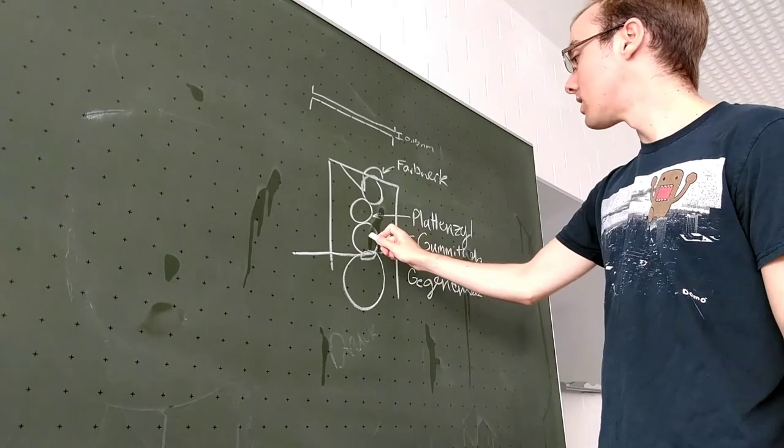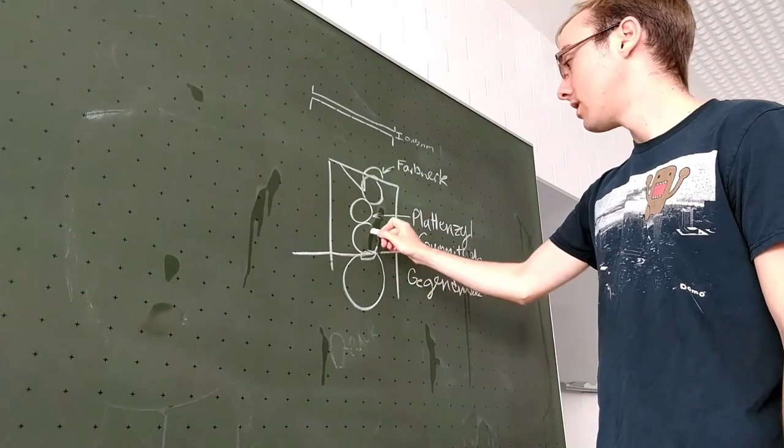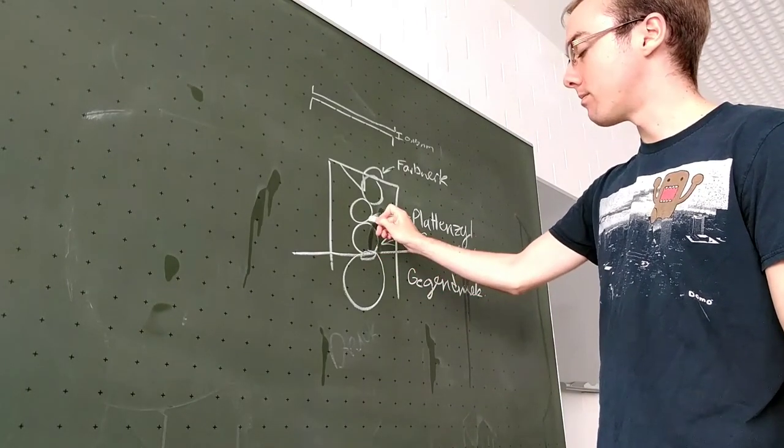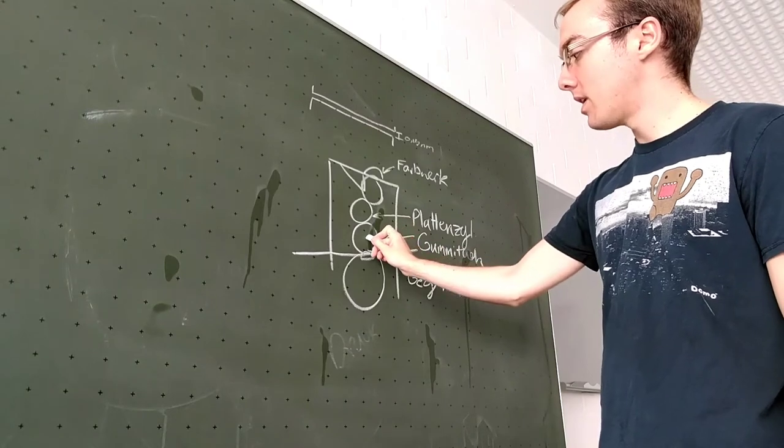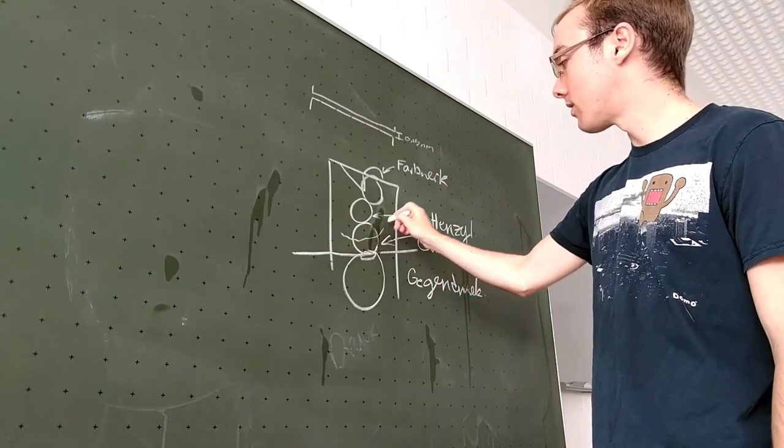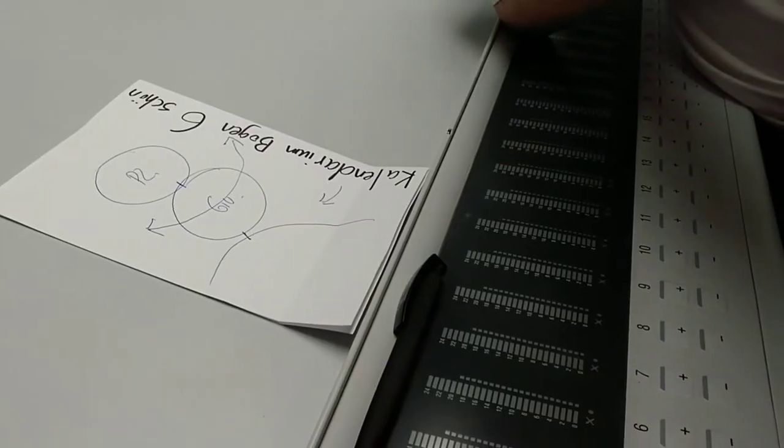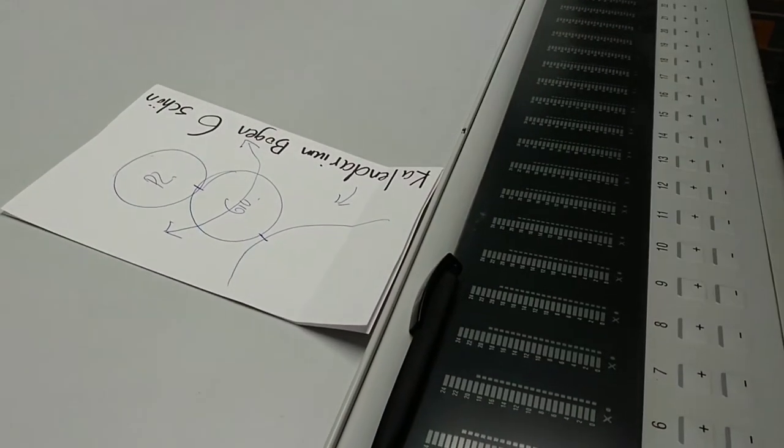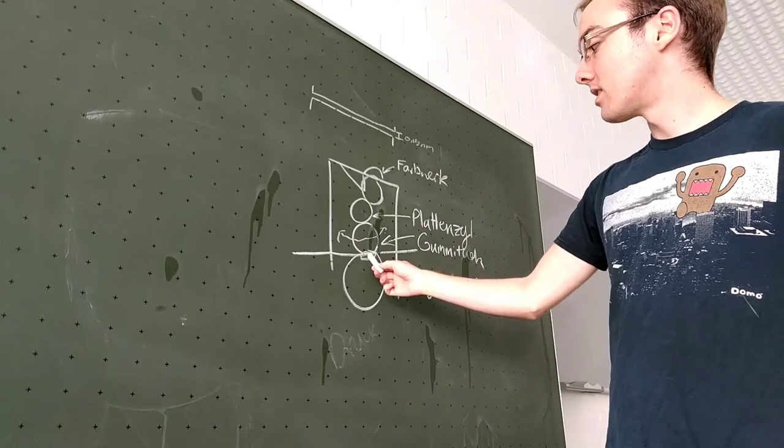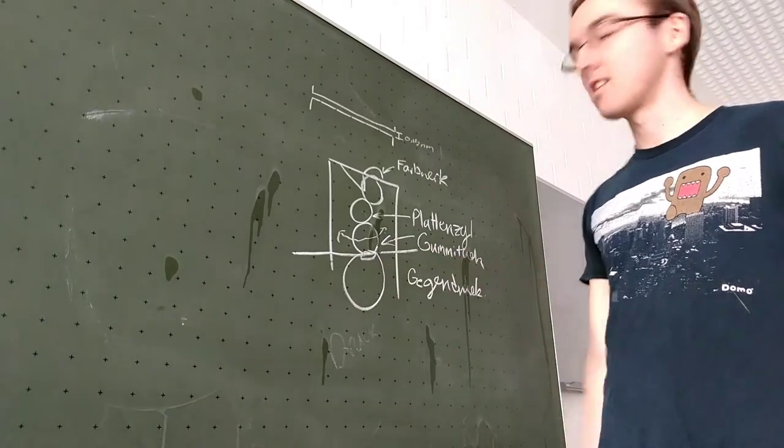The special thing with this machine was that the Gummituch Cylinder doesn't necessarily move up and down or anything, but it can actually swivel around the Platten Cylinder like this. And in doing that, it actually doesn't change the distance between the Platten Cylinder and the Gummituch Cylinder, but it does change the distance between the Gummituch Cylinder and the Gegendruck Cylinder.